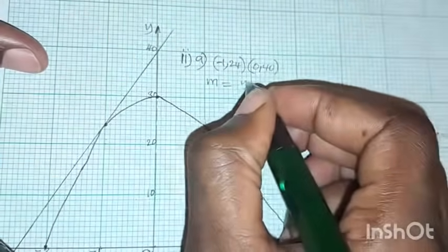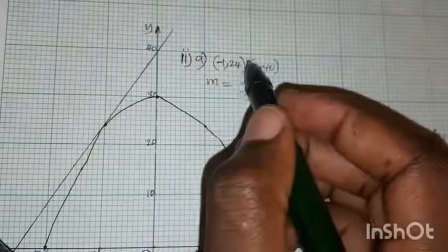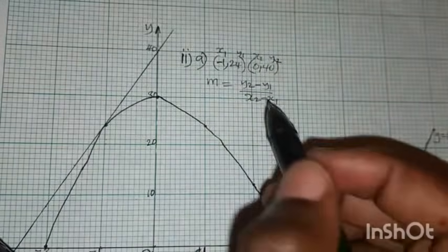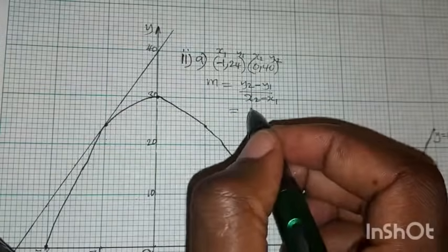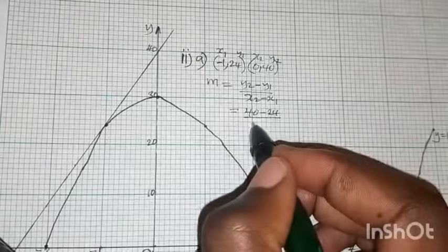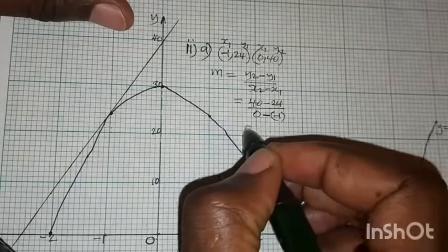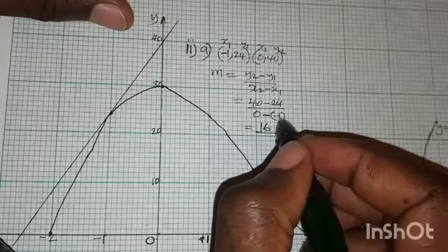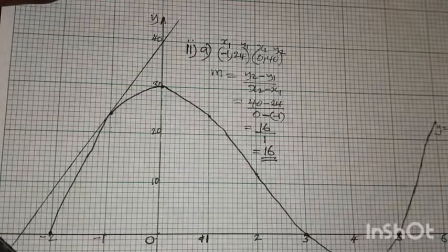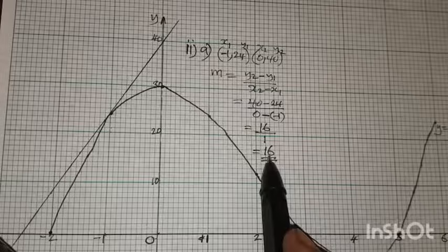Using the gradient formula M = (Y₂ − Y₁) / (X₂ − X₁): M = (40 − 24) / (0 − (−1)) = 16 / 1 = 16. So the estimated gradient is 16. This is an estimate, so your value should be close to but may not exactly match the true gradient.